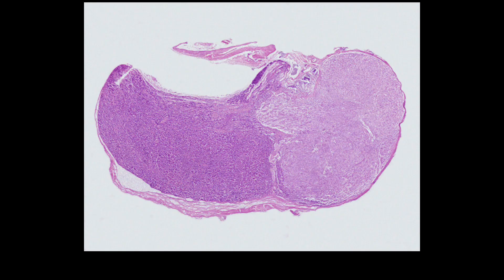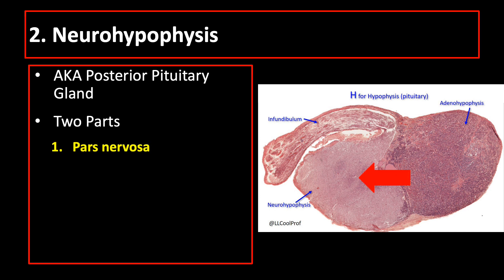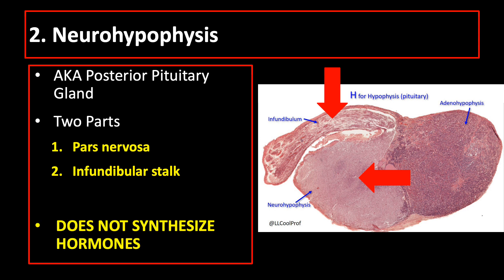The posterior pituitary gland or neurohypophysis has two parts: pars nervosa and infundibular stalk. Unlike the anterior pituitary gland, the posterior pituitary gland does not contain cells that produce hormones — it does not synthesize hormones. It only stores and releases the two hormones produced by the hypothalamus: vasopressin or antidiuretic hormone, and oxytocin.